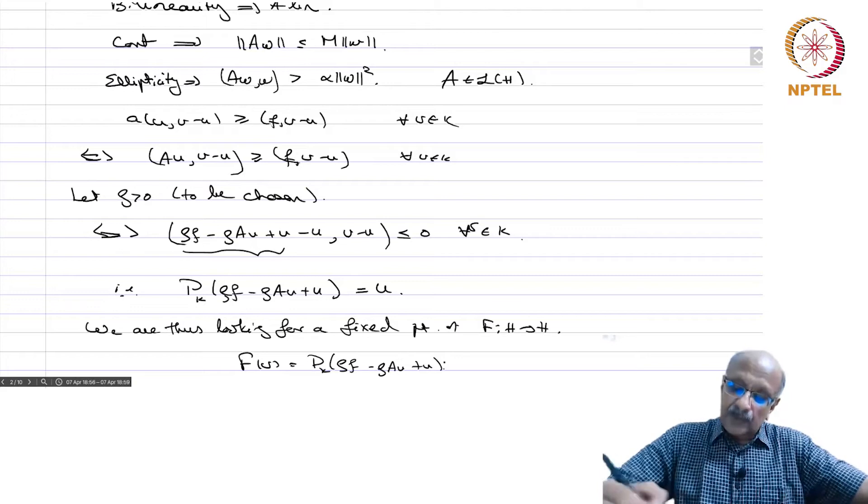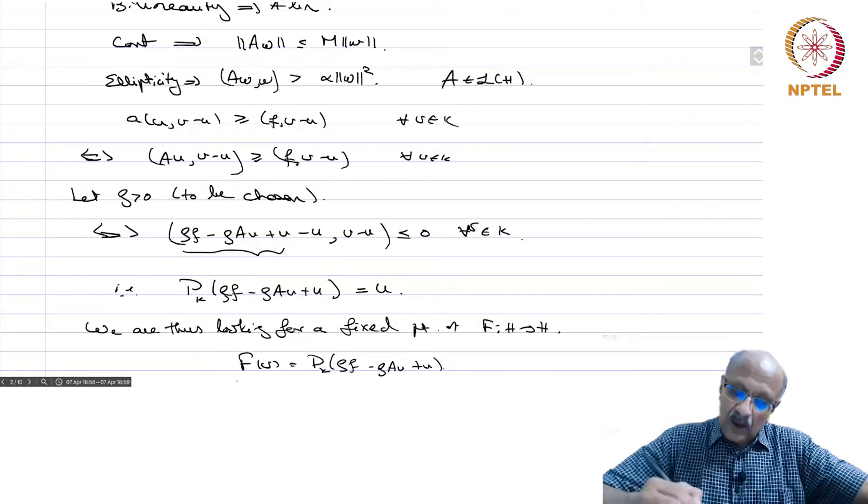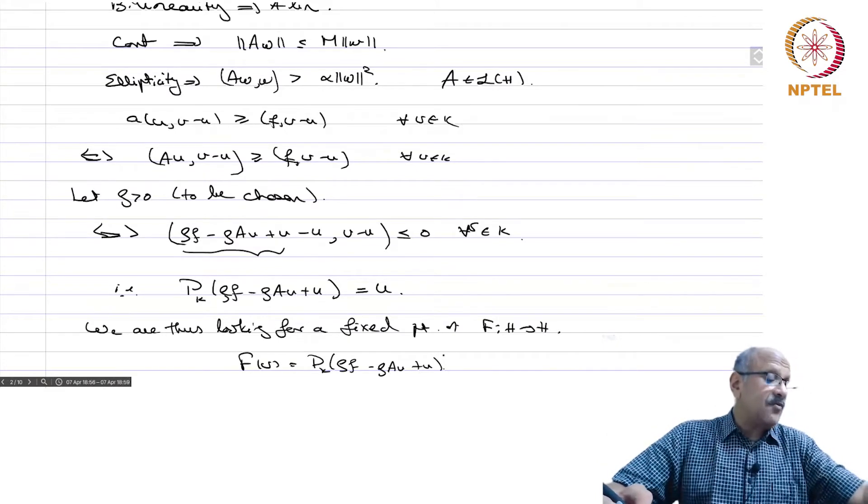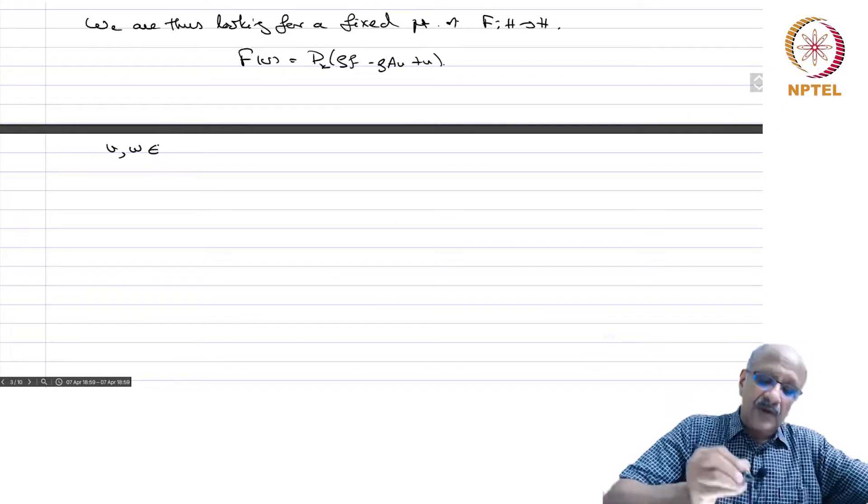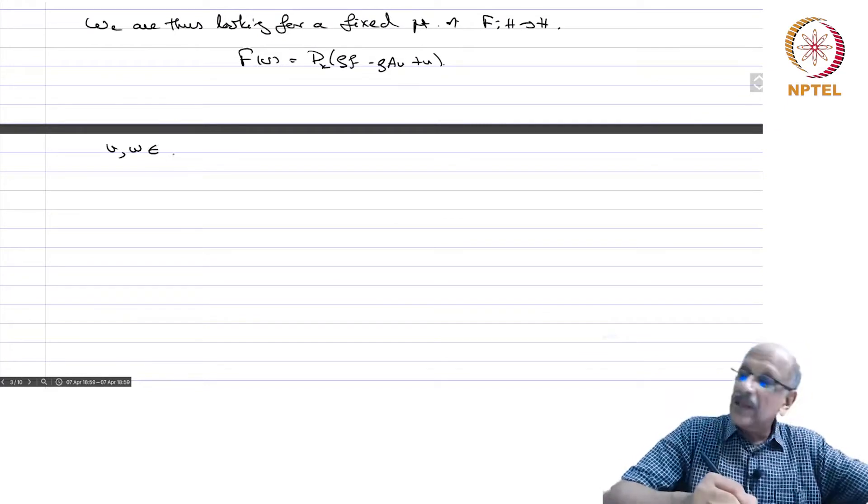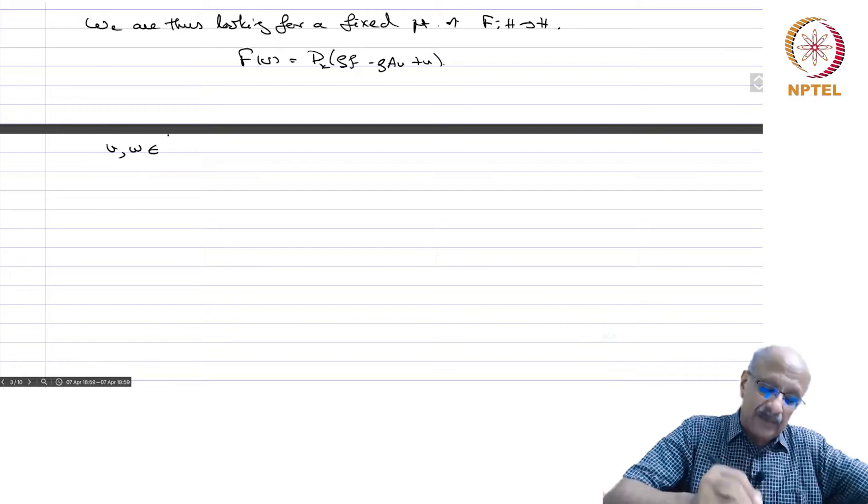We are thus looking for a fixed point of F from H to H, where F(v) is given by projection to K of ρF - ρAu + U. The projection, because it is a projection on K, has range in K. Any fixed point is going to be in K itself. Now let V and W. We want to see whether we can apply the contraction mapping theorem.